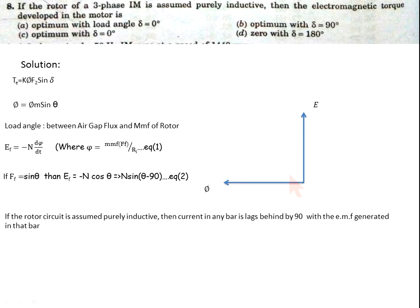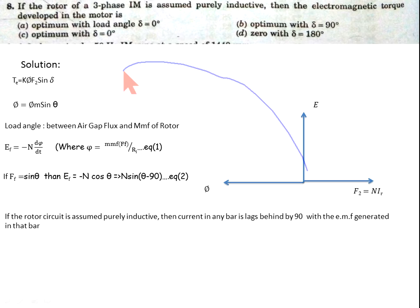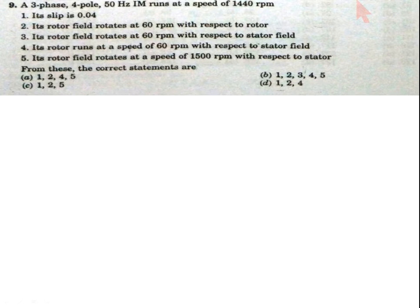If the rotor circuit is assumed purely inductive, then the current in any rotor bar lags behind the EMF generated in that bar by 90 degrees. So the current lags the EMF by 90°, making the angle between the air gap flux and rotor MMF F2 equal to 180°. Substituting the load angle of 180° into the torque equation gives electromagnetic torque equal to zero. So option D is correct.